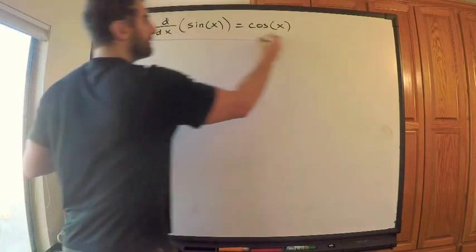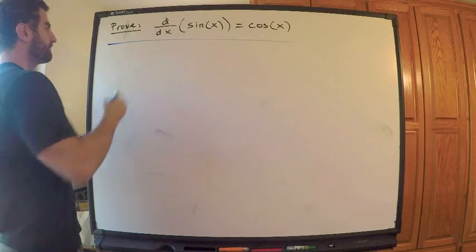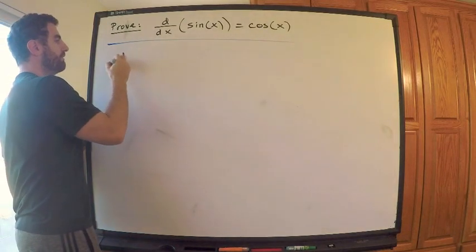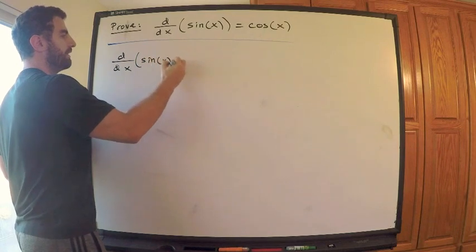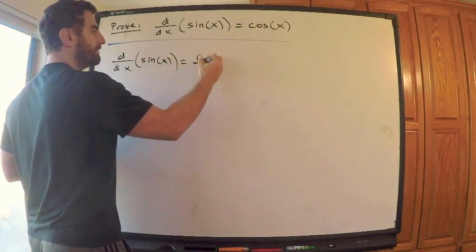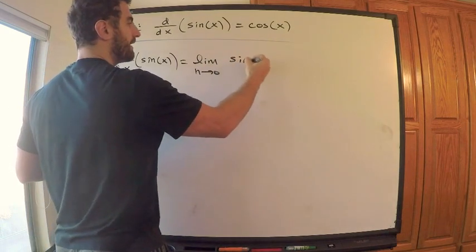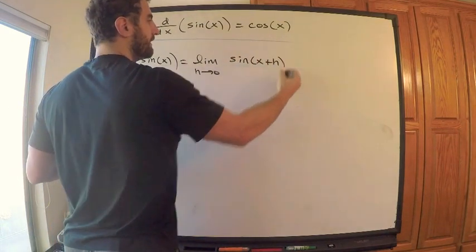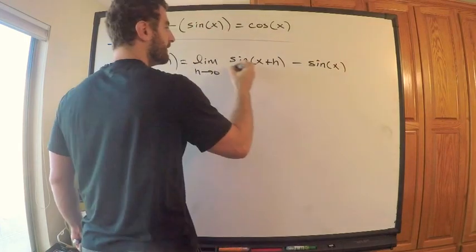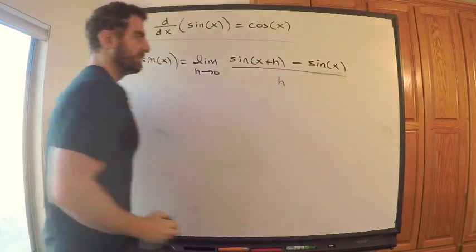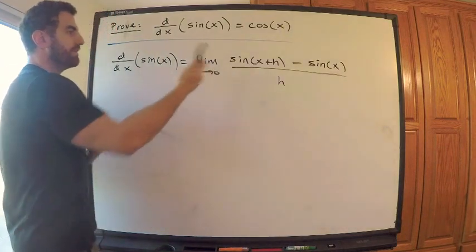We know that the derivative with respect to x of sine of x is equal to the limit as h tends to 0, of sine of x plus h minus sine x, all over h — the limit of the difference quotient. Nothing crazy going on, just using the definition.